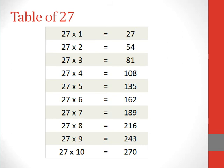27 6s are 162, 27 7s are 189, 27 8s are 216, 27 9s are 243, 27 10s are 270.